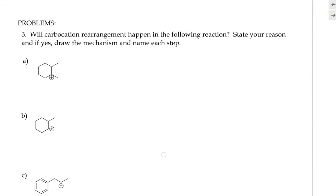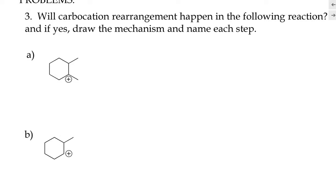Let's try some examples: will carbocation rearrangement happen in the following reactions? State your reasoning, and if yes, draw the reaction mechanism and name each step. In example A, what we have is a tertiary carbocation. Tertiary carbocations are the most stable type — much more stable than secondary and primary. Therefore, there is no need for this carbocation to rearrange, and there will be no rearrangement.